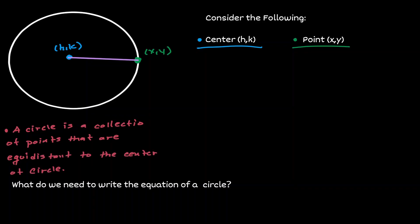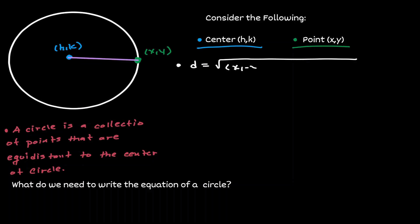If we want to define the equation of the circle, we need to define the distance between the center and any point on the circle. For that, we're going to use the distance formula. For the value of x1 and y1, let's use the location of the point, and for the value of x2, y2, let's use the location of the center of the circle.